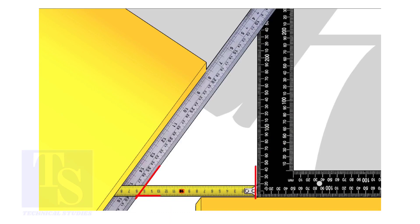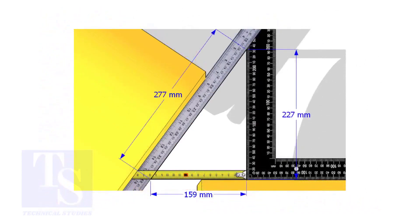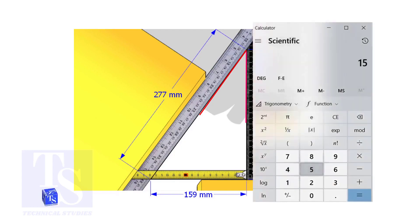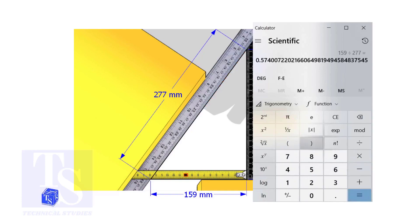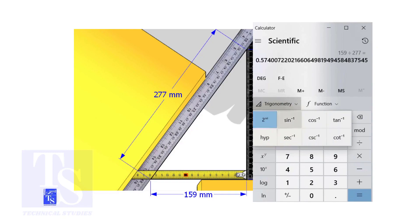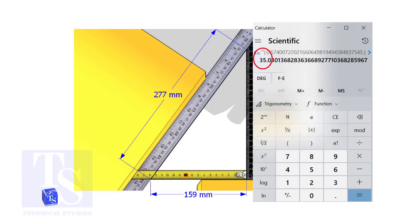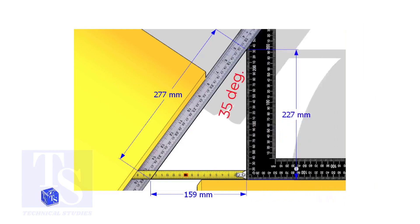Measure and note down the dimensions of the triangle. Assume that these are the dimensions. Let us calculate the including angle. If you apply the sine rule, the angle will be 159 divided by 277, shift sine. So the answer is 35 degrees.